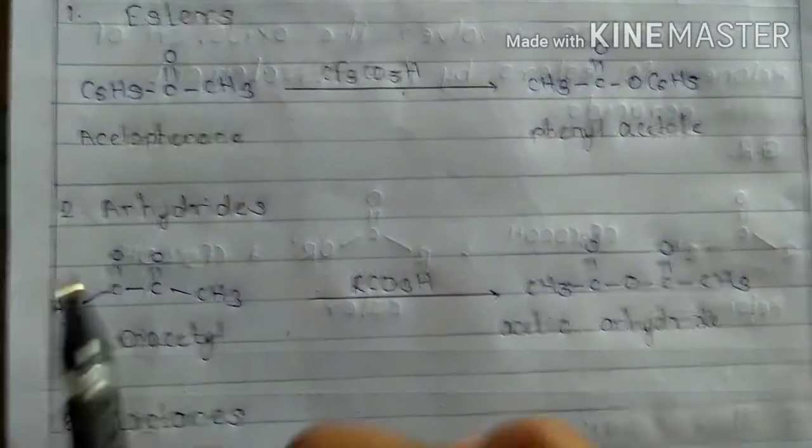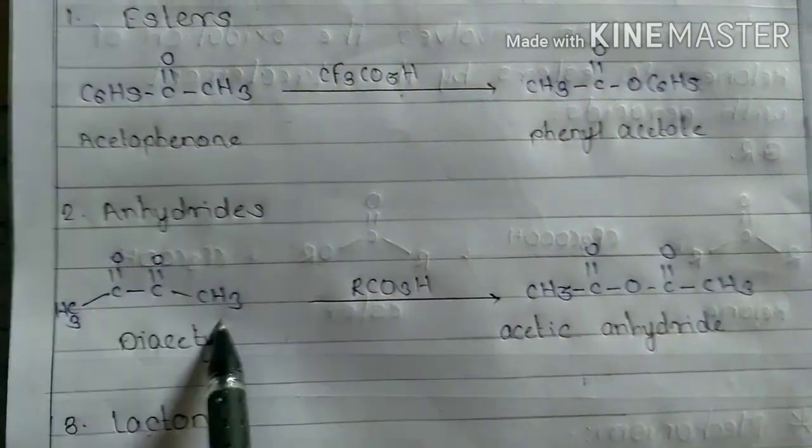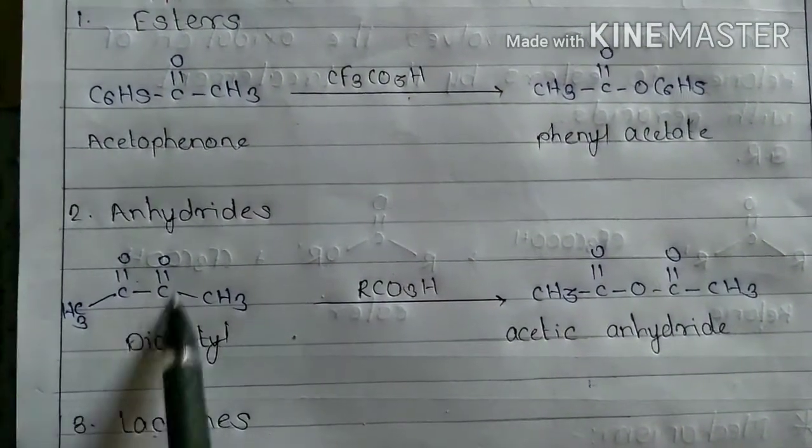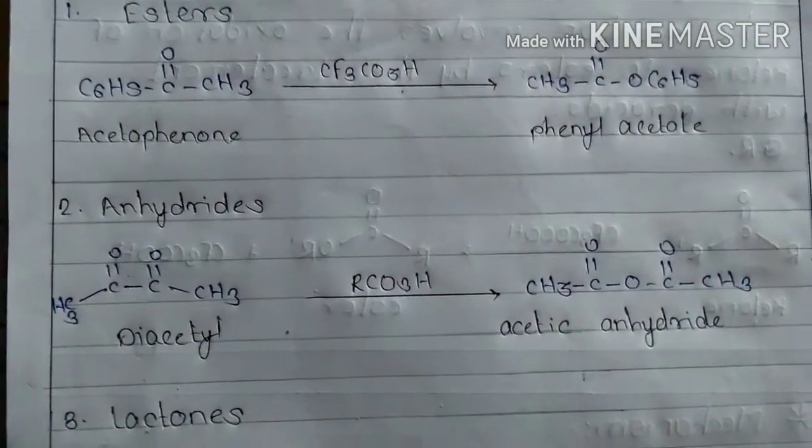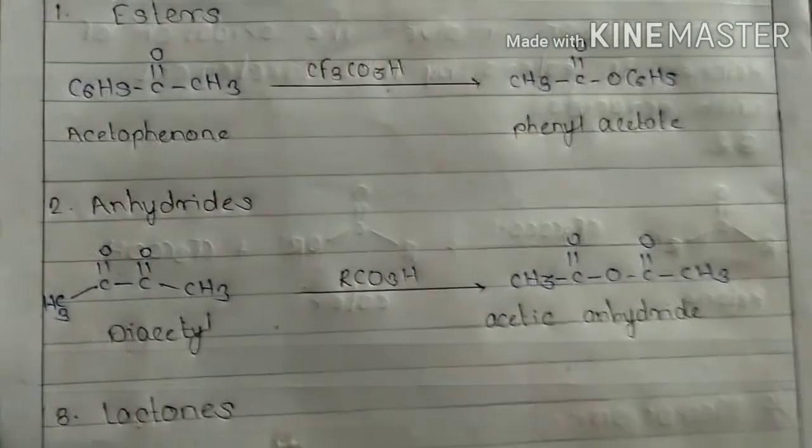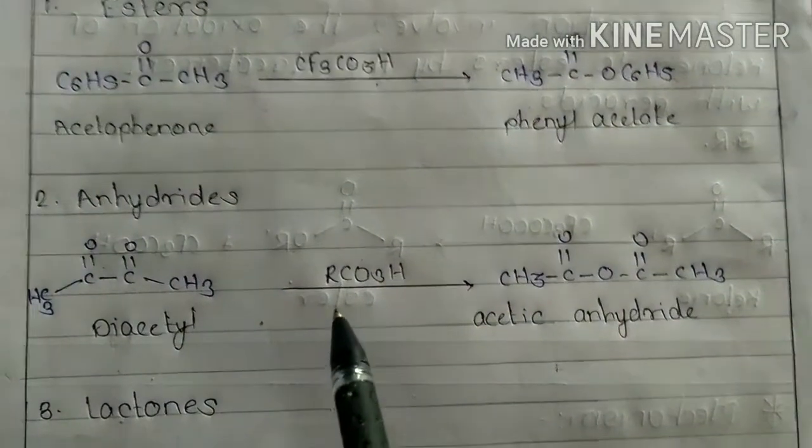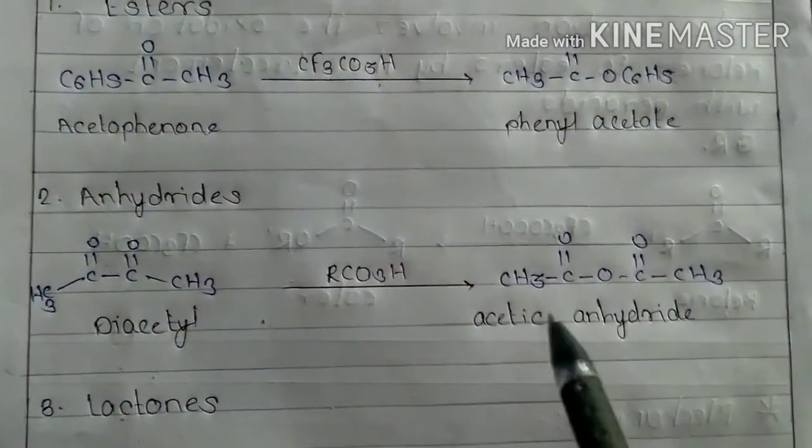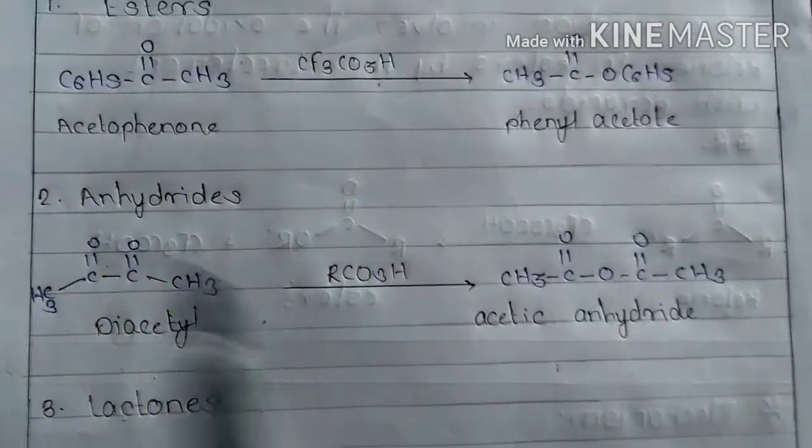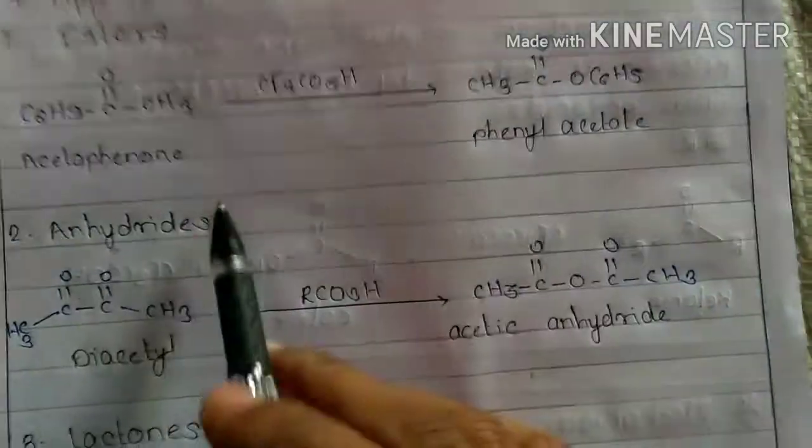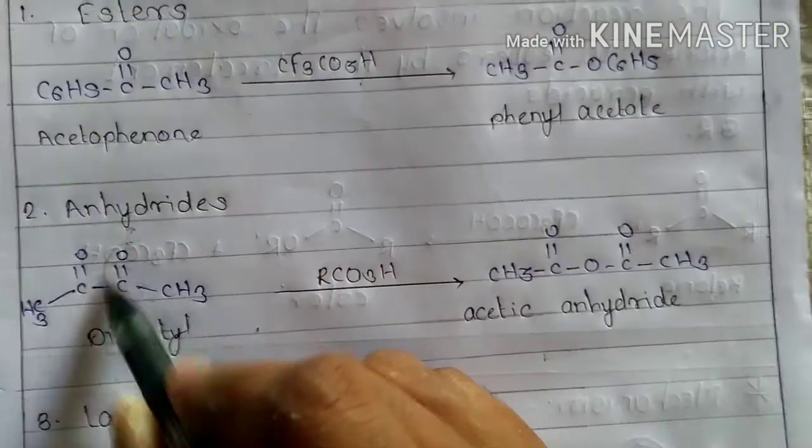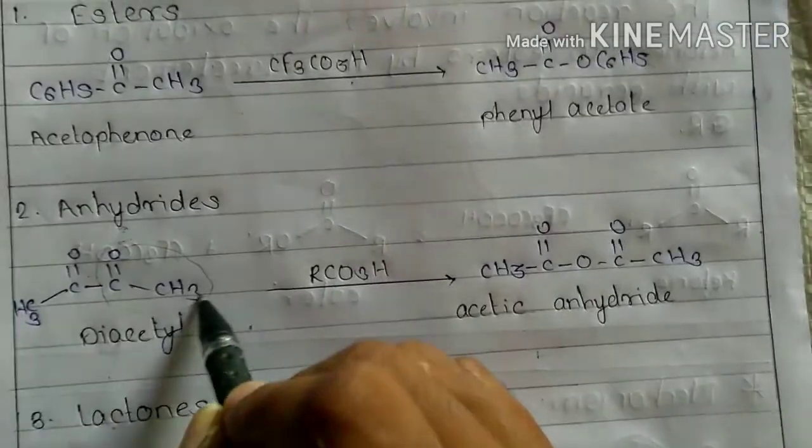Then the second application is the formation of anhydrides. Here diacetyl, that means 1,2-diketone in the presence of peracetic acid. Here is formation of acetic anhydride, that means this group migrates. This whole group migrates.